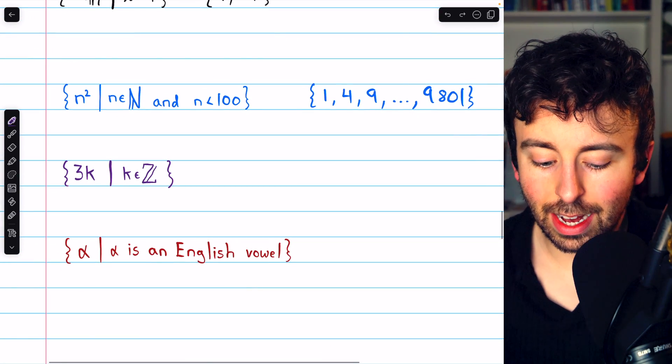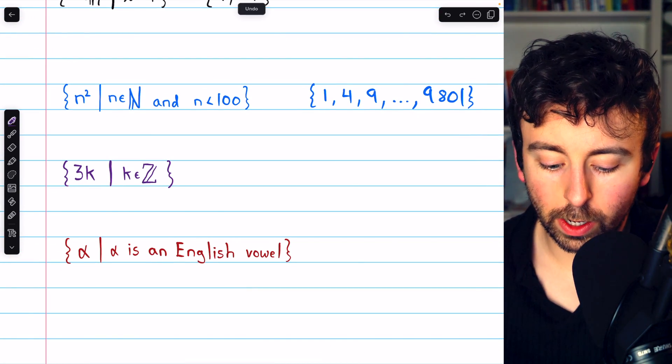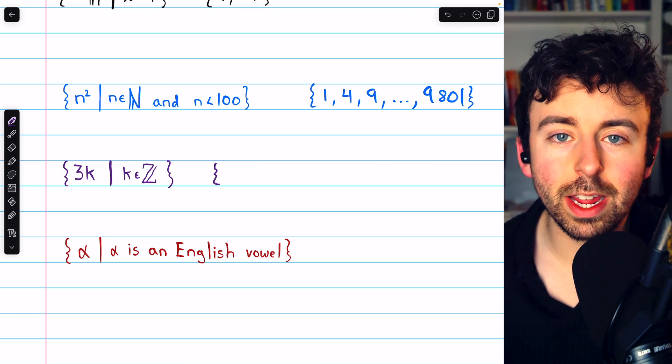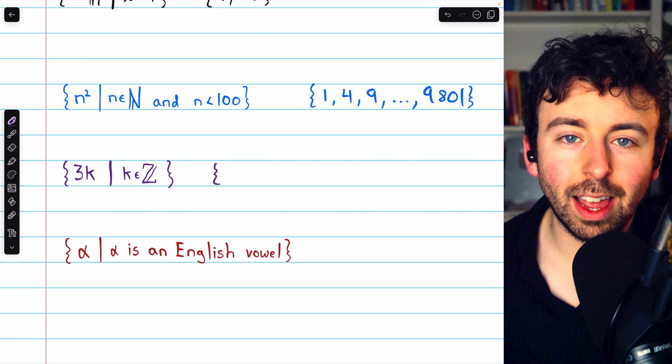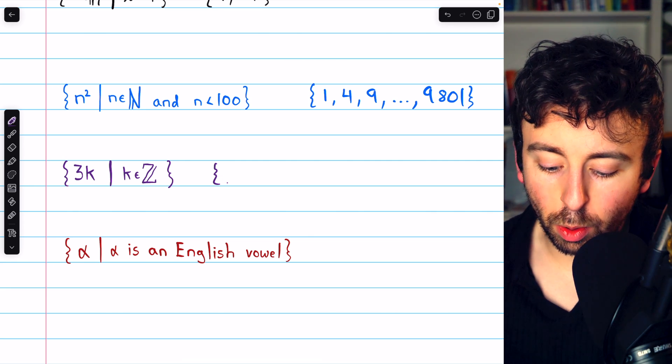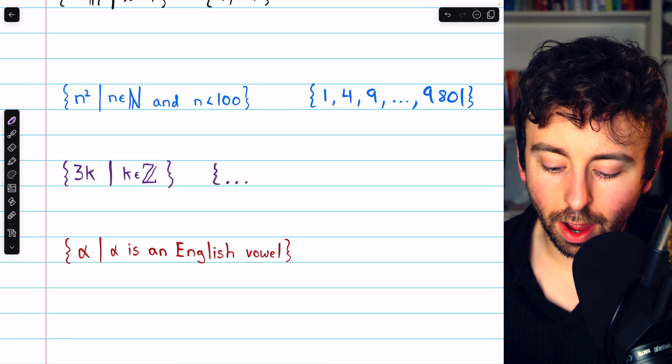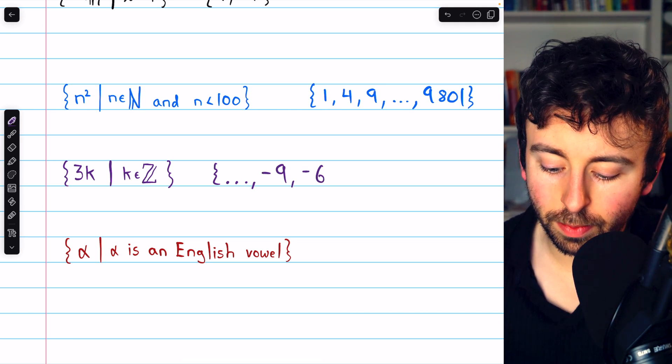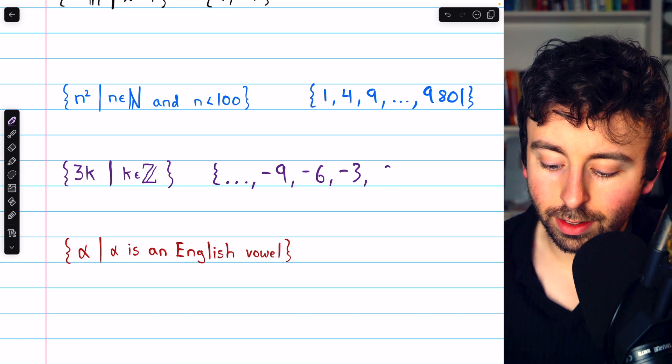This next example is the set containing 3k, where k is an integer. So this is just all multiples of 3. In order to capture this, I need the negative and the non-negative multiples of 3. So I'll start with dot, dot, dot, and then negative 9, negative 6, negative 3, 0.